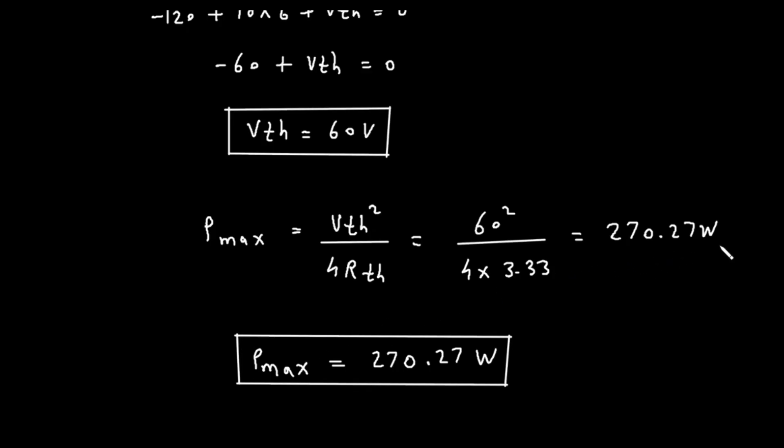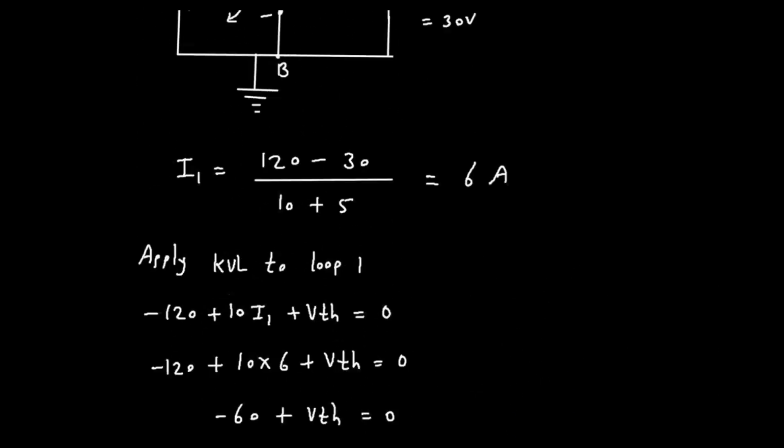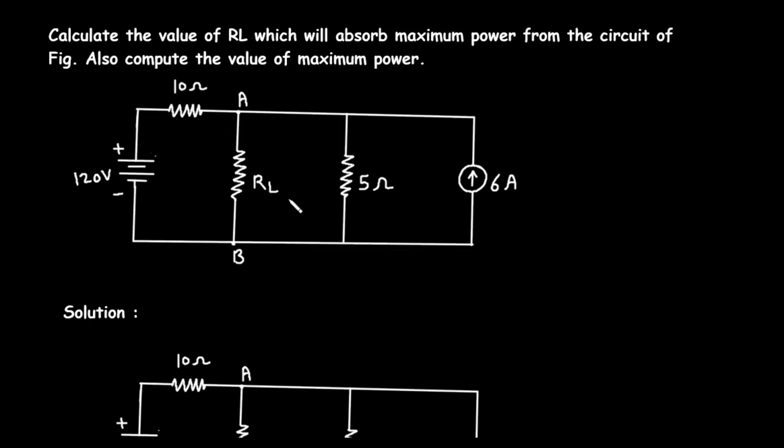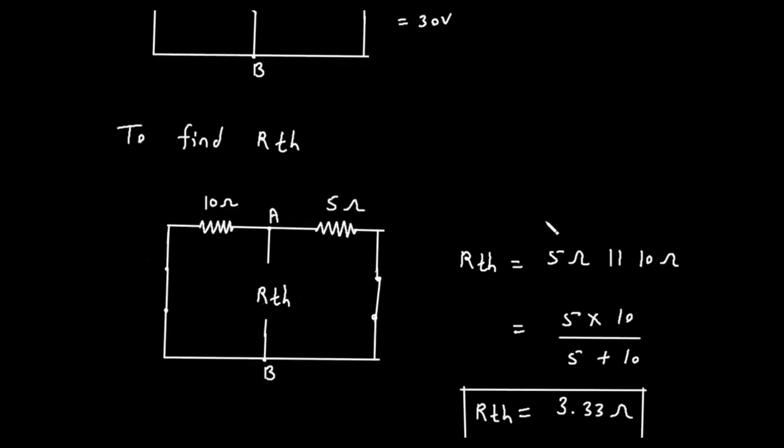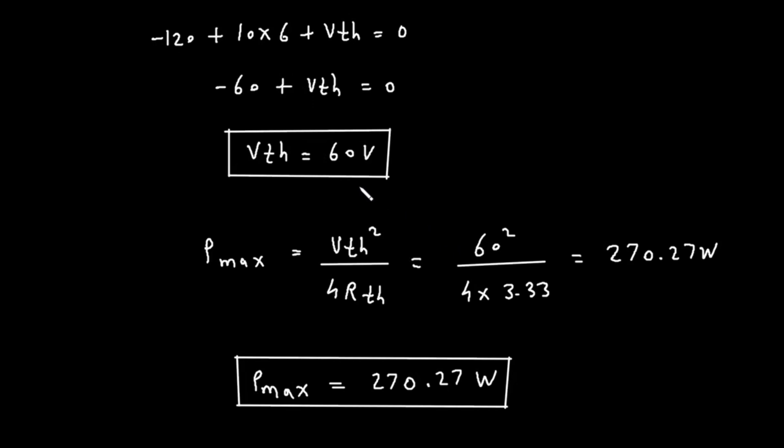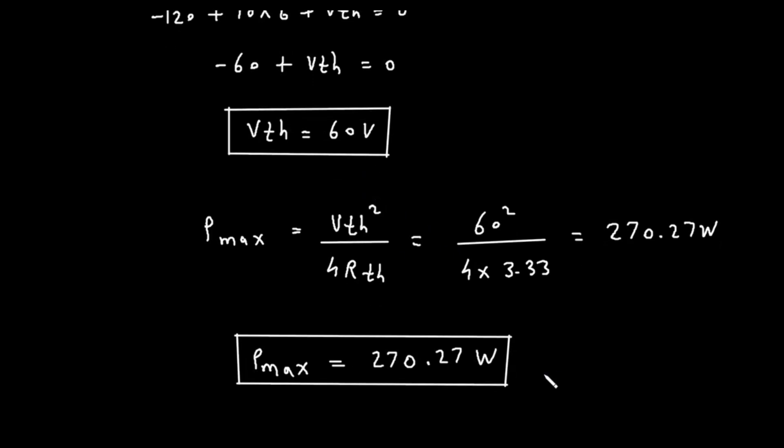The unit for power is watts. So, the maximum power, Pmax, is 270.27 watts. To summarize our findings, the value of the load resistor RL that will absorb the maximum power from the circuit is equal to the Thevenin resistance, which is 3.33 ohms. The maximum power that this resistor will absorb is 270.27 watts. This concludes our step-by-step analysis of the problem. By applying Thevenin's theorem and the maximum power transfer theorem, we were able to determine both the required load resistance and the resulting maximum power.